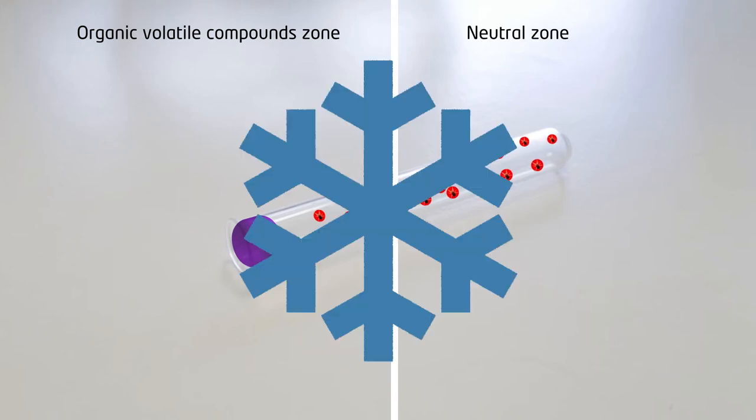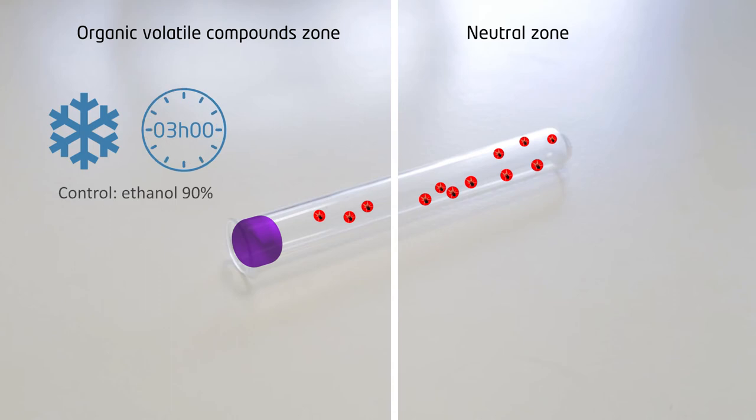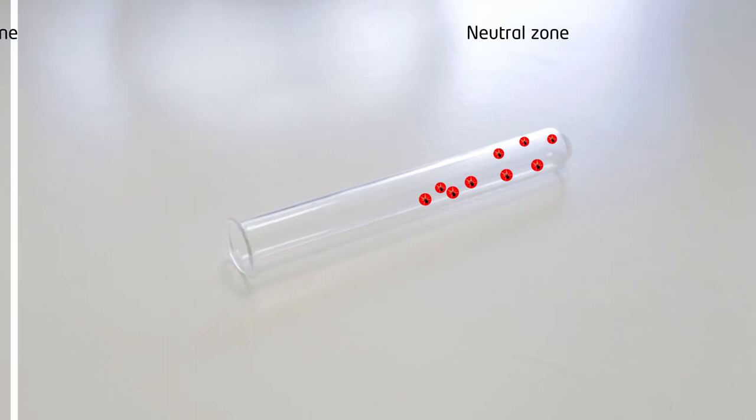The tubes were frozen to block the red mites' movement and observe their repartition in the tube. Each compound was compared to a control. A repellent index was calculated for each compound.